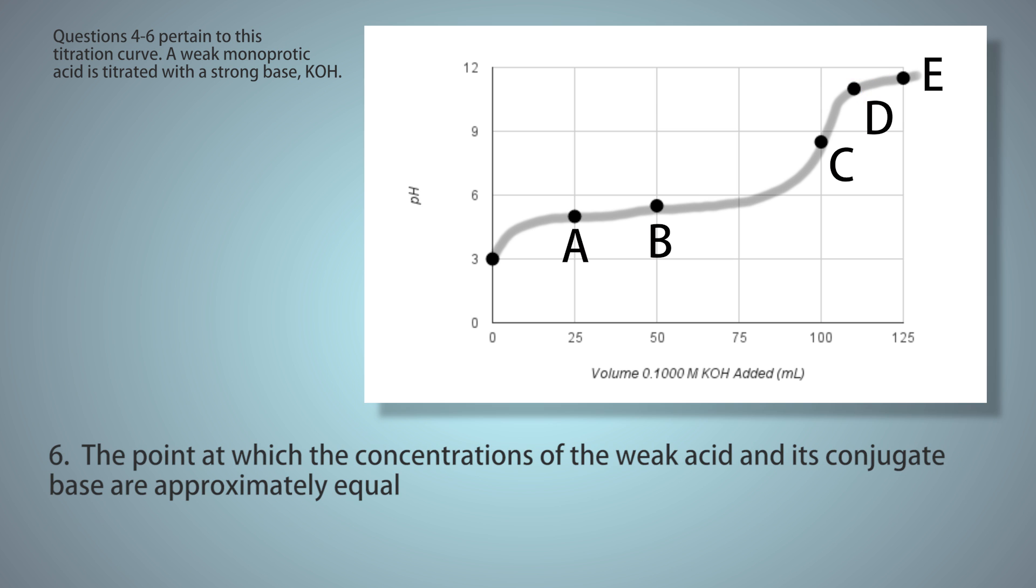Question 6: The point at which the concentrations of the weak acid and its conjugate base are approximately equal. Here you need to know a detail about titration curves. For monoprotic acids, the point halfway between the start of the curve and the equivalence point is significant. That's where the concentrations of the acid and its conjugate base are equal.